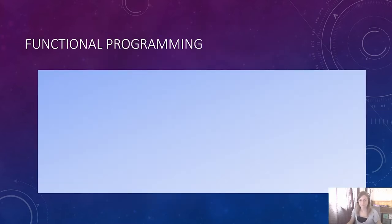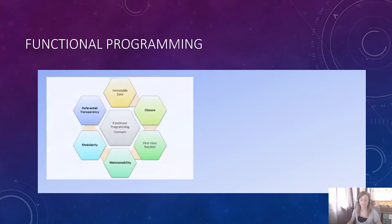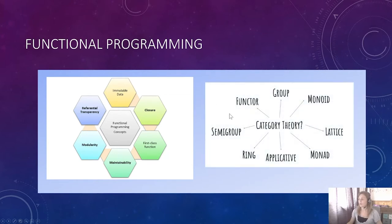Functional programming — you can't talk about Scala without talking about it, but it's not too scary. The core concepts of functional programming include mutability, closure, first-class functions, maintainability, modularity, and referential transparency. Functional programmers absolutely love category theory — they can talk about it for hours. We're not going to go into all of these, but we will look at a monad.